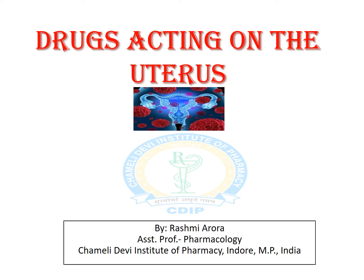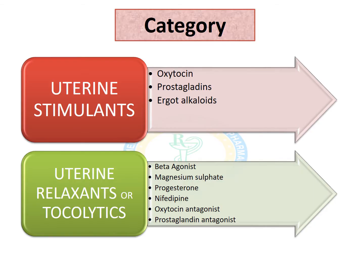Let us begin with the classification. There are two categories of drugs acting on the uterus: first are uterine stimulants, and another are tocolytics, or we can say that they are uterine relaxants.